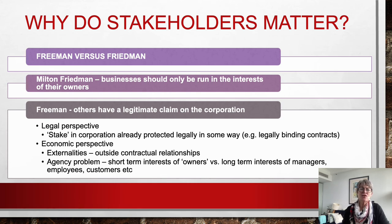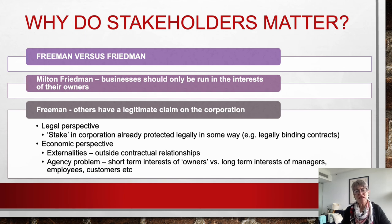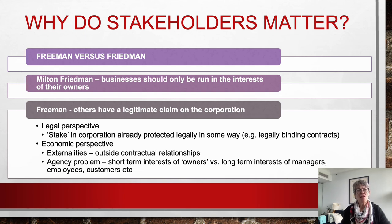From the economic perspective, there are externalities, the contractual relationship, and the agency problem - the short-term interests of owners as shareholders versus the long-term interests of managers, employees, and customers. Shareholders want an immediate return on investment and can exit quickly by selling shares. In contrast, managers look at organizational success, employees seek career stability and family support, and customers expect reliability in goods and services. That's why stakeholders matter.